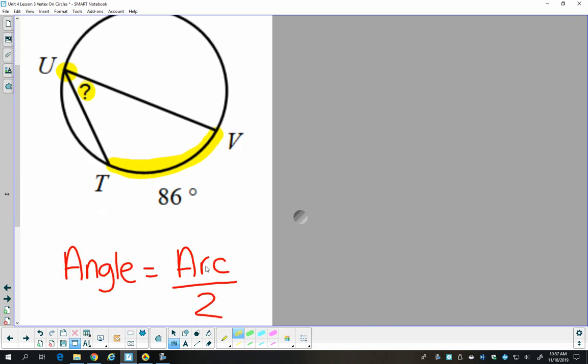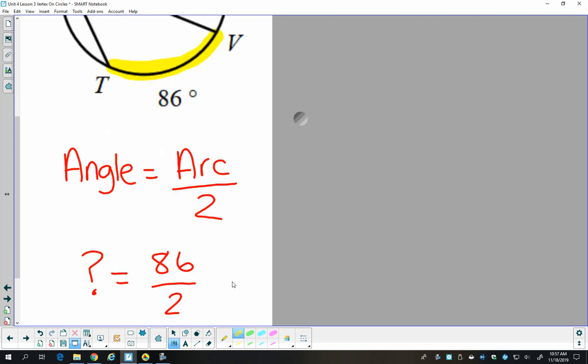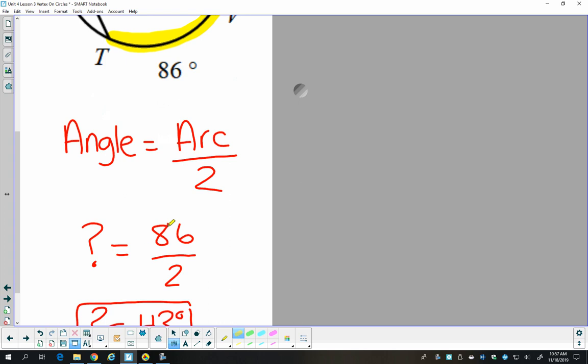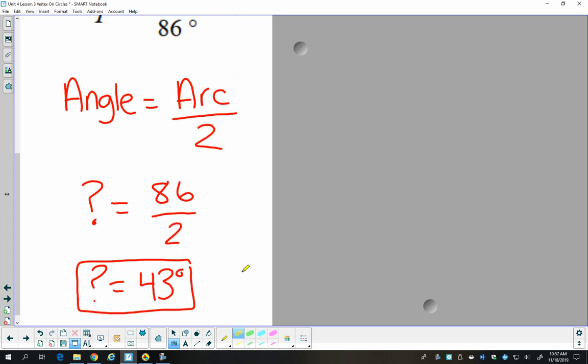So I like to always write the formula or write the relationship every time and then plug in. So the question mark is the angle, 86 is the arc, and I can simplify to find out the angle is 43 degrees.